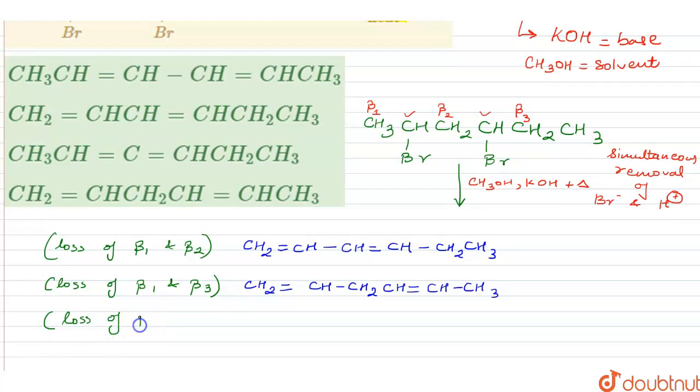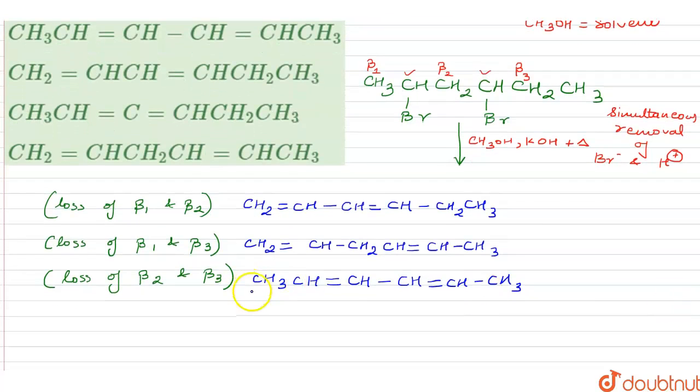Now what next? Next would be the loss of beta 2 and beta 3, because beta 1 and beta 2 was done, beta 1 and beta 3 was done, so these two positions were left. In that case, the product would be formed as follows: this CH3 remains intact, here is your CH, so the adjacent carbon for this C-Br is going to be beta 2. Next CH and then double bond CH-CH3. This is your third diene which has been formed.